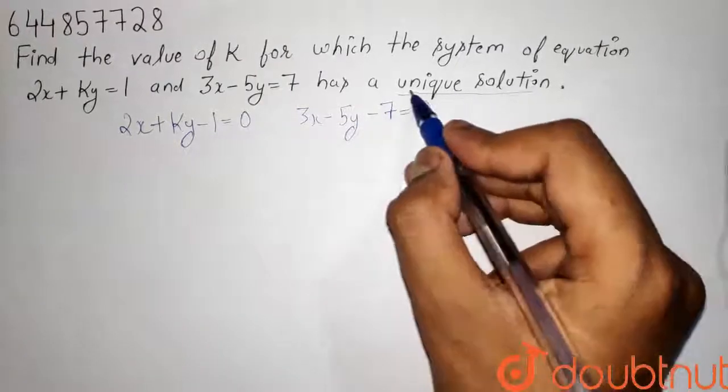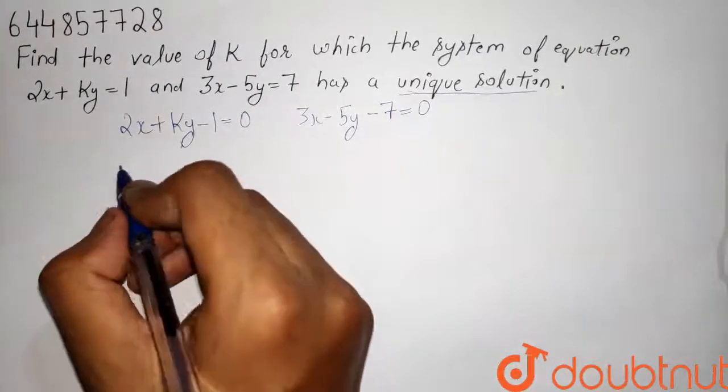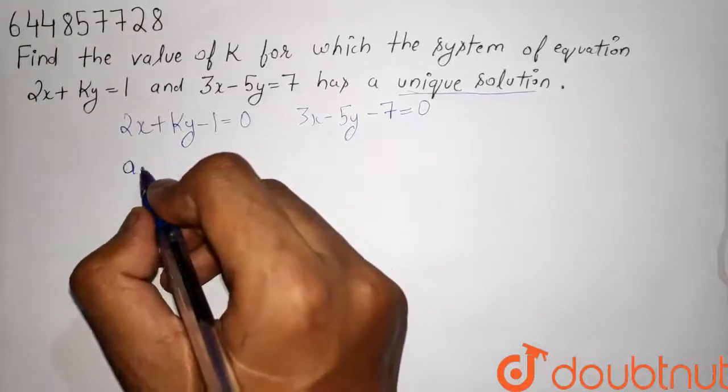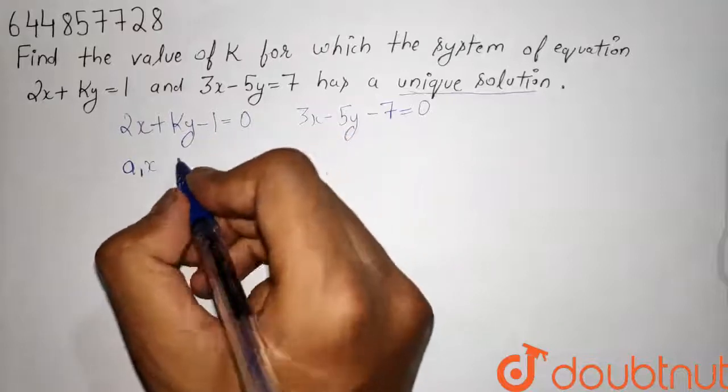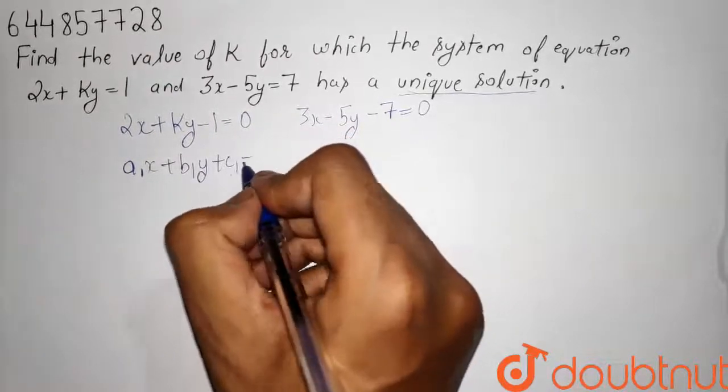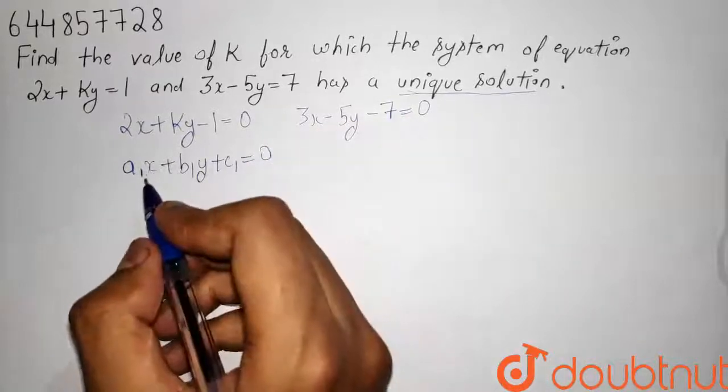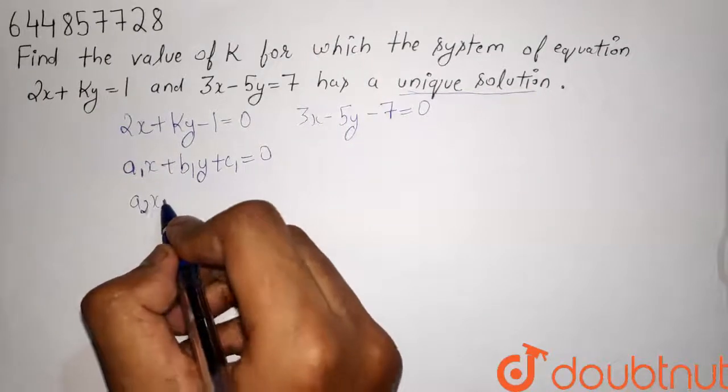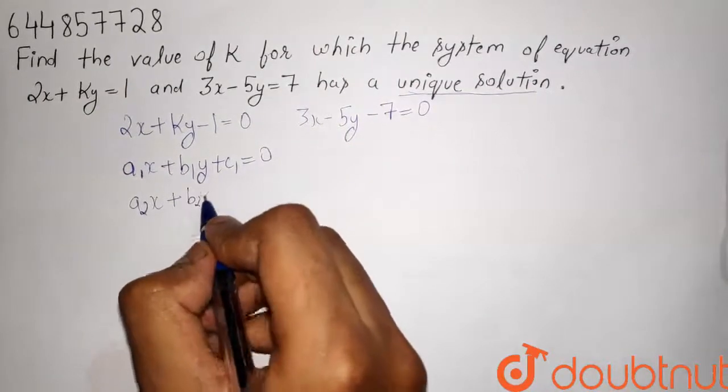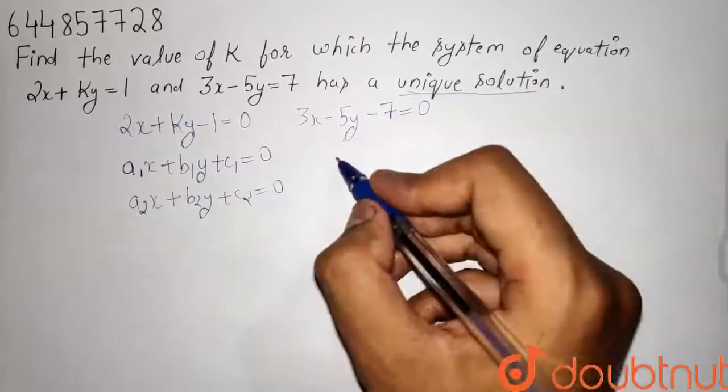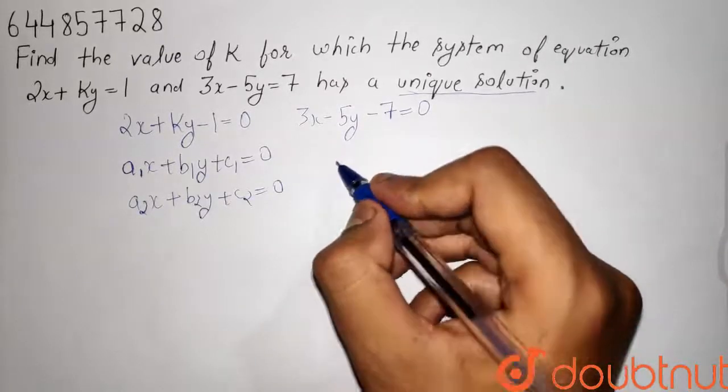Basically, what is a unique solution? When two equations are given, that is a1x + b1y + c1 = 0 and the second equation is a2x + b2y + c2 = 0, the condition for unique solution is a1/a2 not equal to b1/b2.